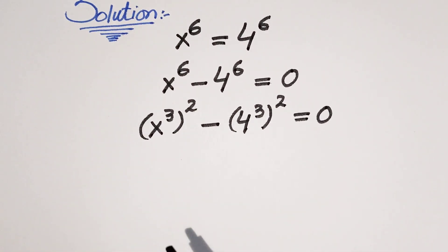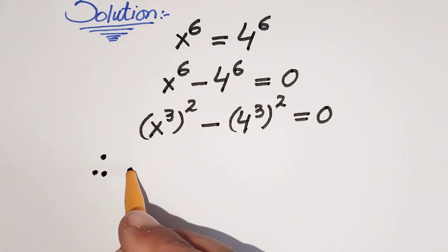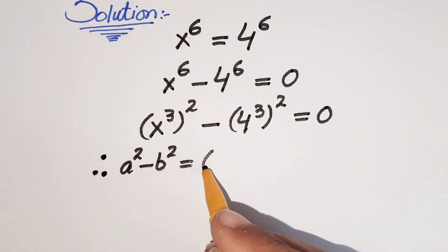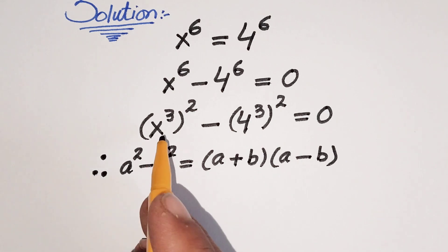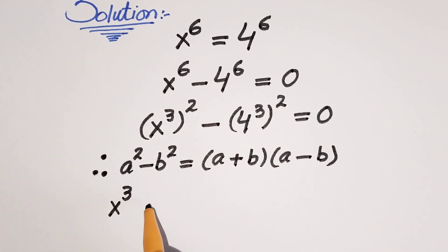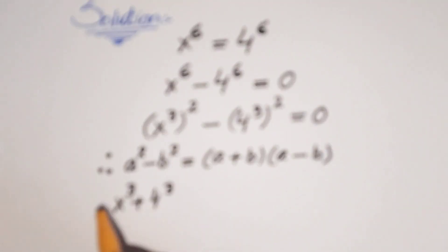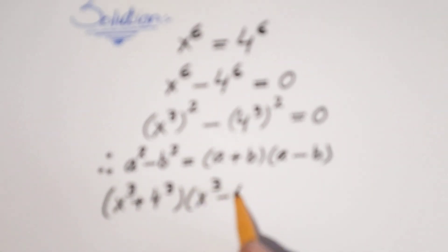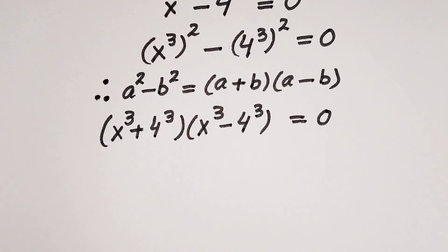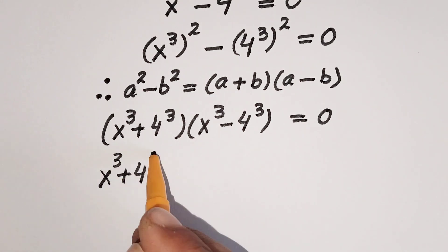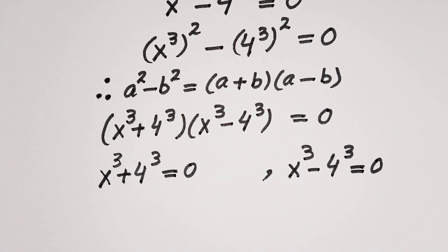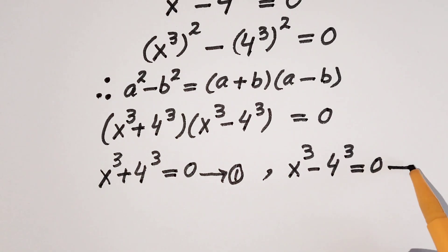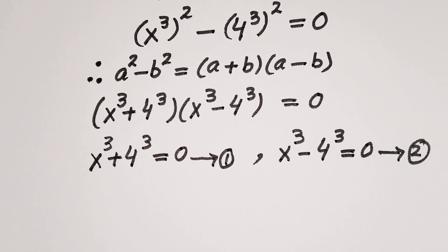Now we use the algebraic identity a² minus b² equals (a+b)(a-b). So here a is x³ and b is 4³, giving us (x³ + 4³)(x³ - 4³) equals 0. This gives us two possible conditions: Equation 1 is x³ + 4³ = 0, and Equation 2 is x³ - 4³ = 0.